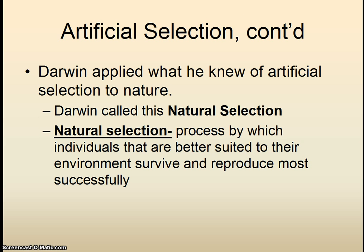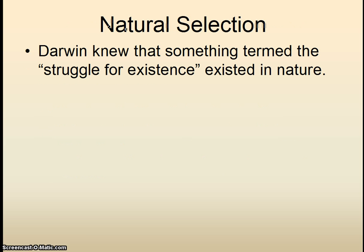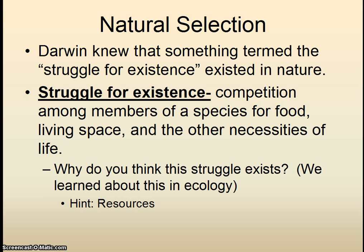Let's take a look at how natural selection works. Think back to ecology for a minute. Darwin knew from another scientist that there was this thing called the struggle for existence happening in nature. The struggle for existence is basically that there are limited necessities of life — there's only so much food, only so much living space, water, and only so many mates. Life isn't like a Disney movie when you're out in the wild — there's not unlimited everything with everybody happy and singing a song at the end.